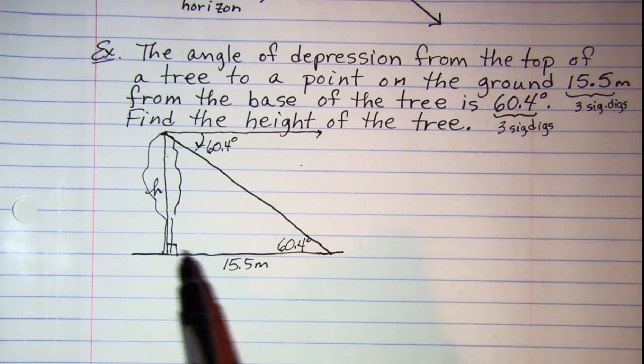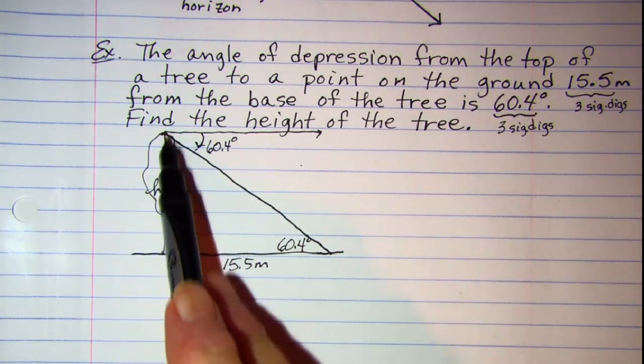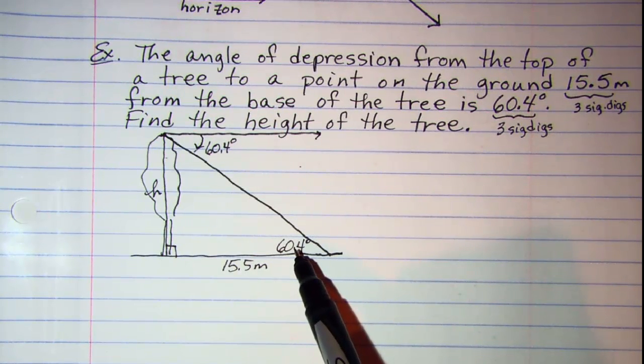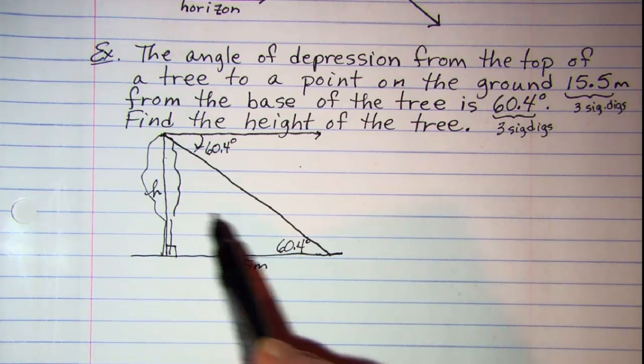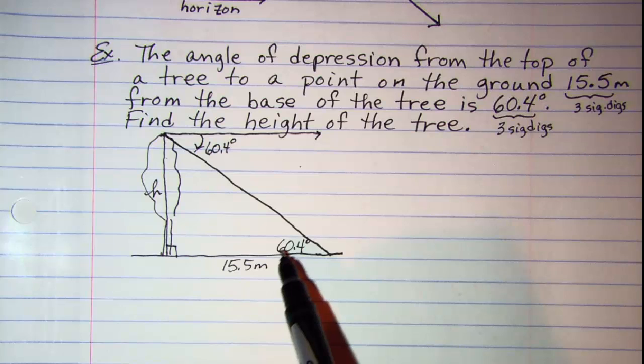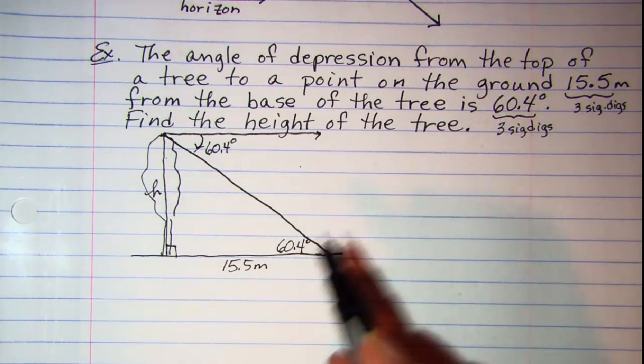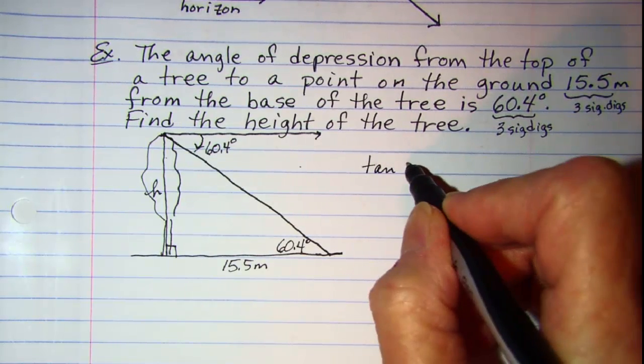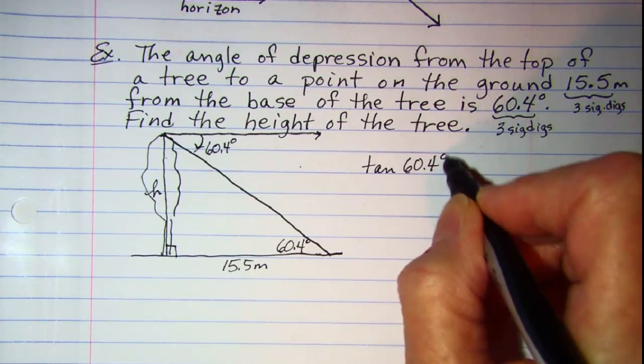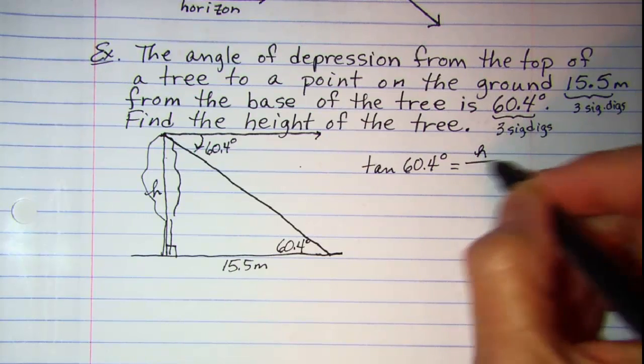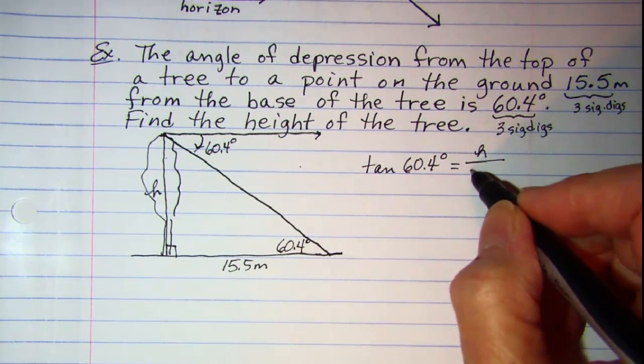But you need to have an angle inside the right triangle to solve it. I'll use this 60.4 and we know that the side opposite is H and the side adjacent is 15.5. So the trig function that uses opposite and adjacent is tangent. So I would say the tangent of 60.4 degrees is equal to opposite H over adjacent 15.5.